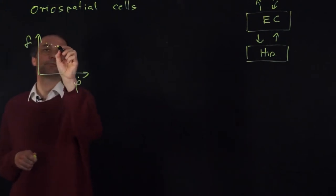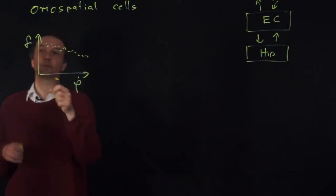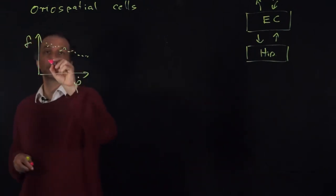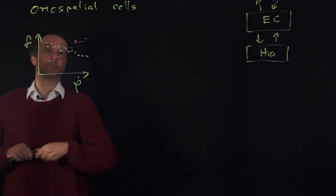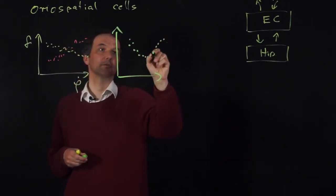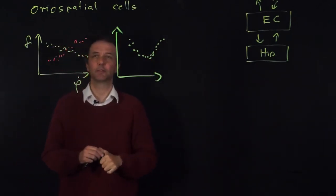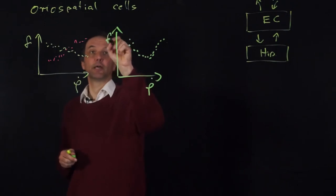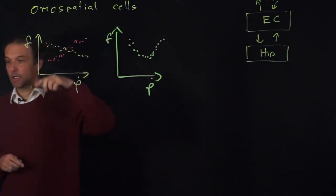Some cells fire more as the angular velocity increases — for example, if the head turns more to the left. Another type of cell might have the opposite tuning. But there are also cells that have different tuning profiles. The key point is that the firing rate depends on the angular velocity and not on the head direction or any other property. So these are the angular head velocity cells.